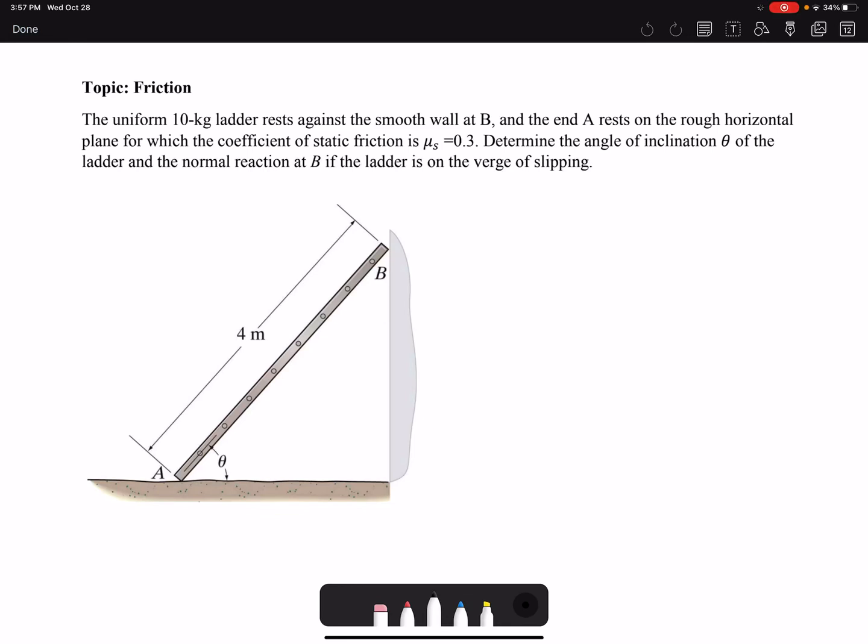Hello everyone, in this video we are going to solve a friction problem example. The uniform 10 kilogram ladder rests against a smooth wall at B. The word smooth means that we don't have any friction at B.